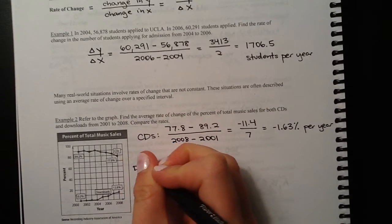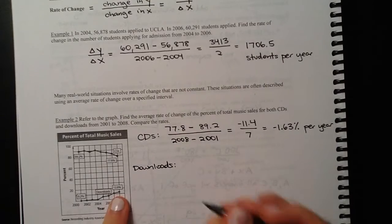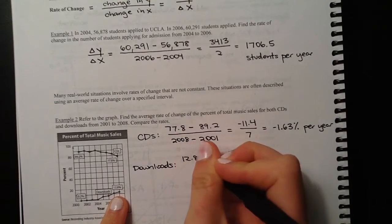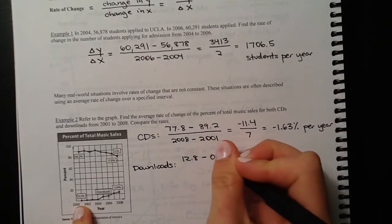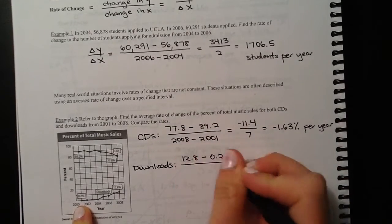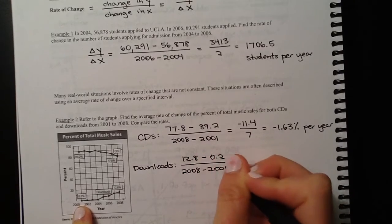And then downloads, as you can tell from the chart, downloads are increasing. So in 2008, 12.8% of music sales were from downloads versus only 0.2% in 2001. So change in time is the year 2008 minus the year 2001. Let's plug this in as well.